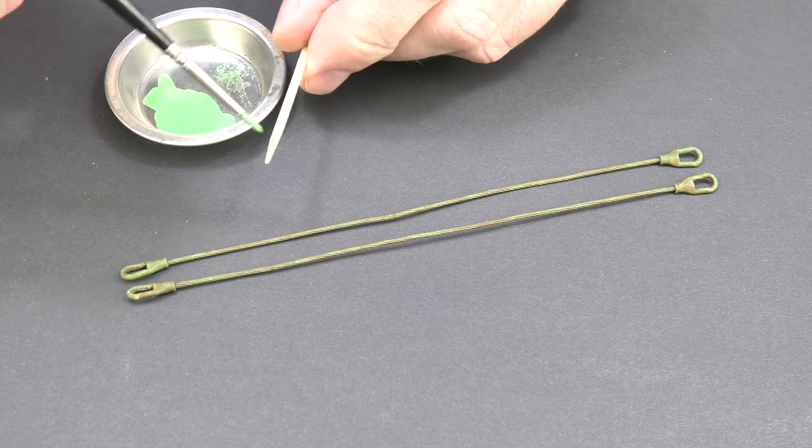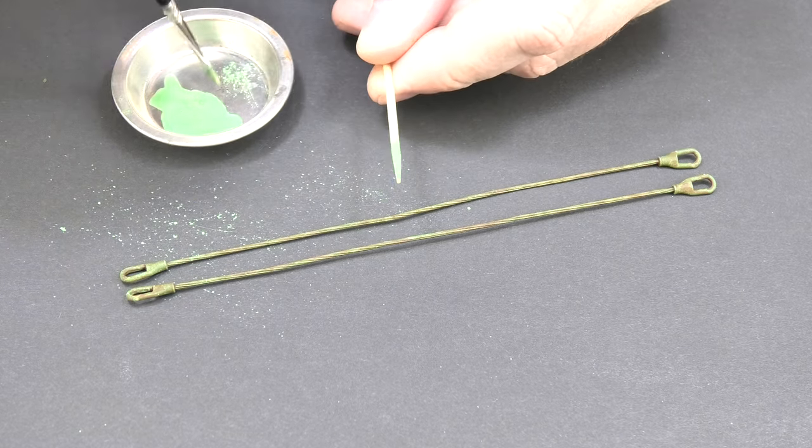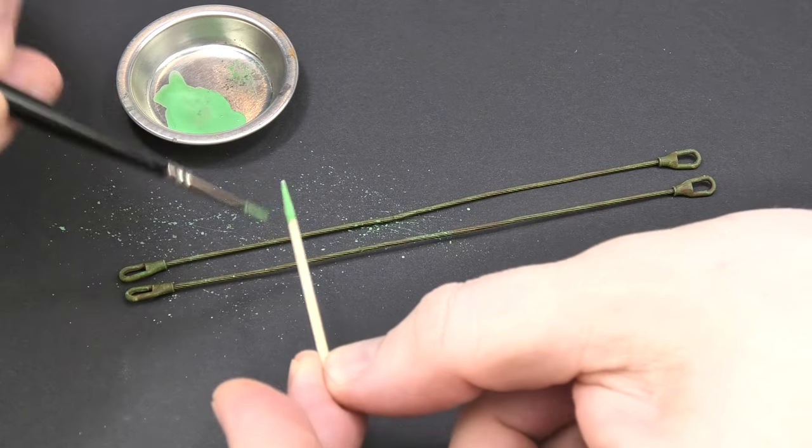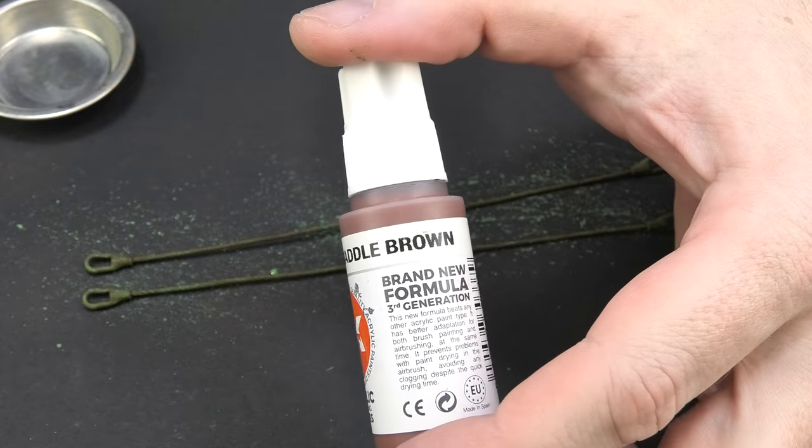For the second time I use green paint for chipping and apply small splashes along the entire length of the ropes. I do the same to complete the look with some rust splashes.